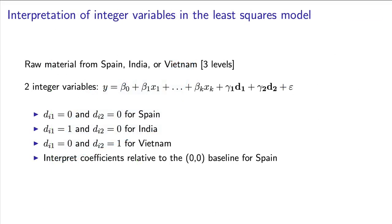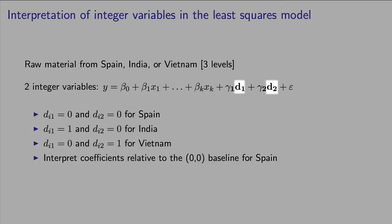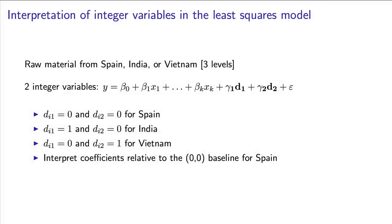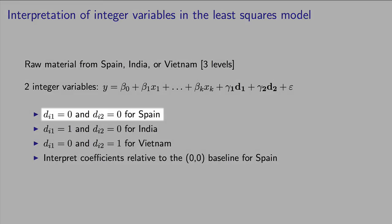The final piece that I want to close off this video with is to look at the case where our integer variables take on more than two levels. Consider a new example, where we know that our raw material has an effect on the output y, and we happen to acquire our raw material from three countries – Spain, India or Vietnam. We say that our integer variable has three levels. And we can code that with 3 minus 1 new variables. In other words, two new integer variables are required. Let's call them d1 and d2 in this particular example. The choice you make for how you assign d1 and d2 is arbitrary. We could set d1 equal to 0 and d2 equal to 0 for Spain. Then we might set d1 equal to 1 and d2 kept at 0 for India. And finally, we can choose to set d1 to 0 and d2 equal to 1 for the case for Vietnam.